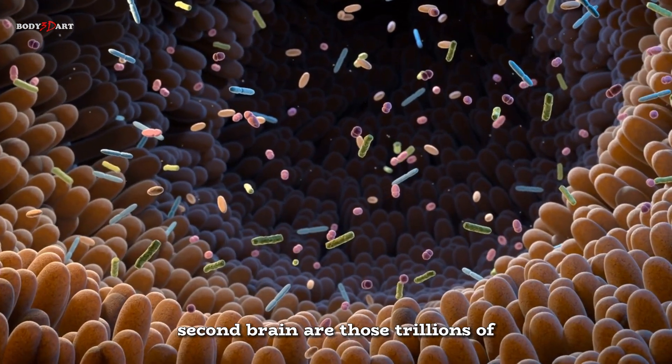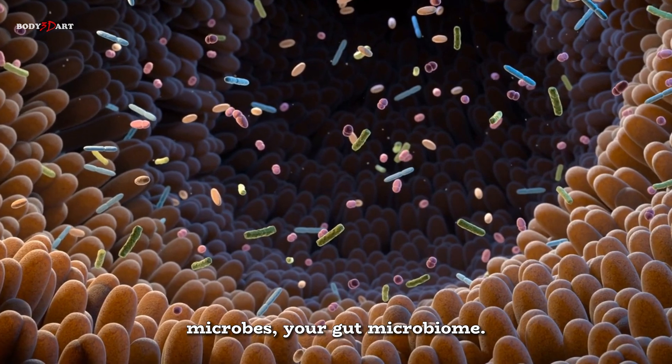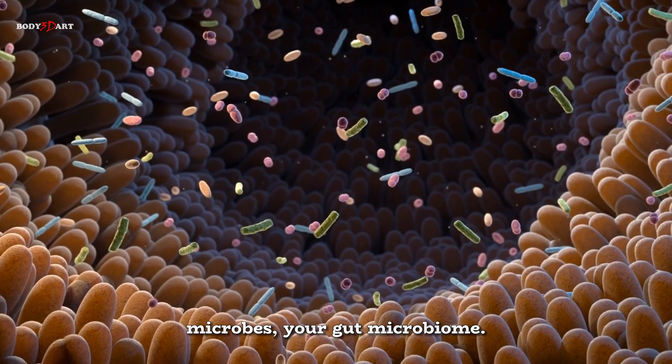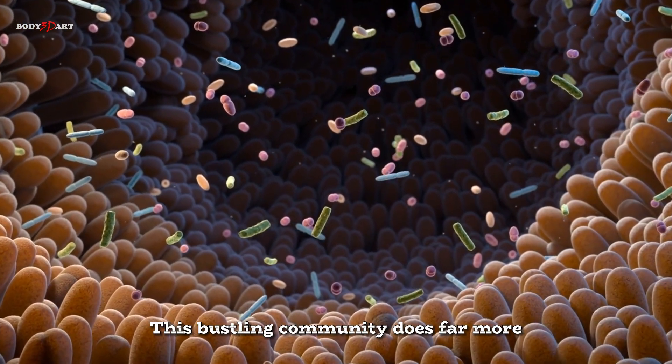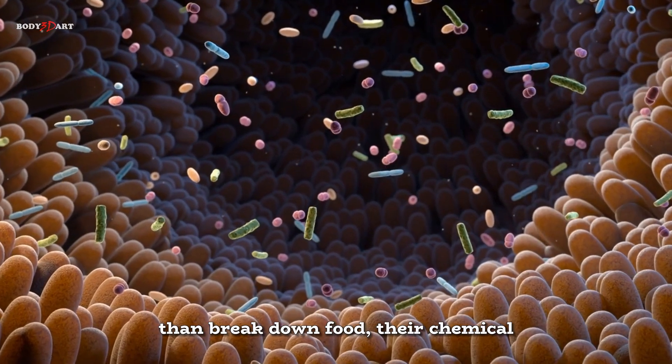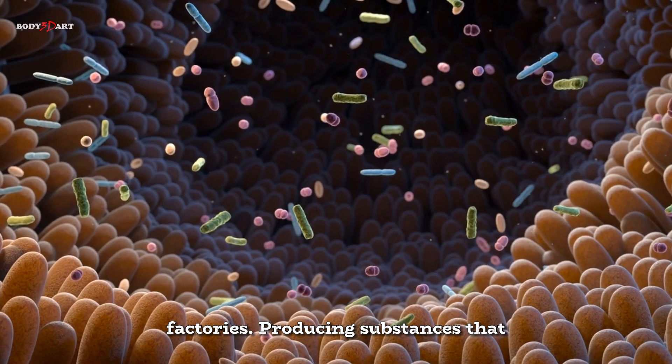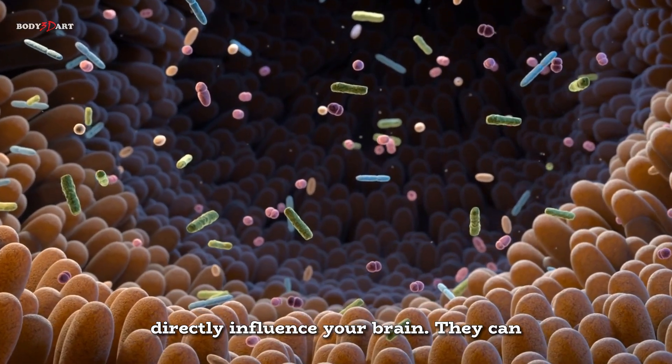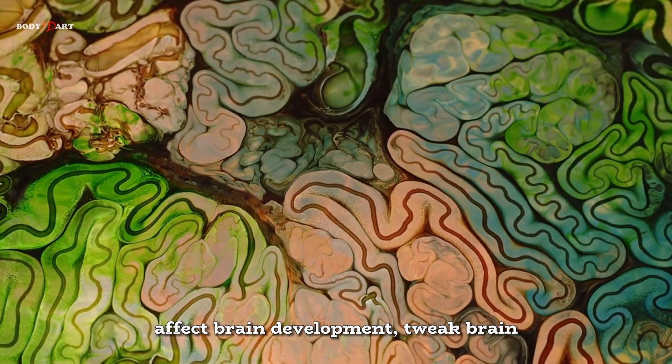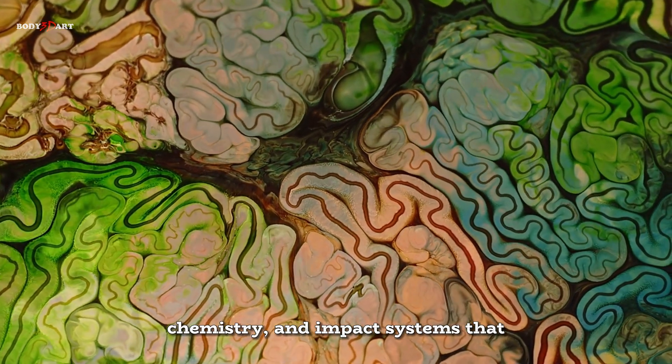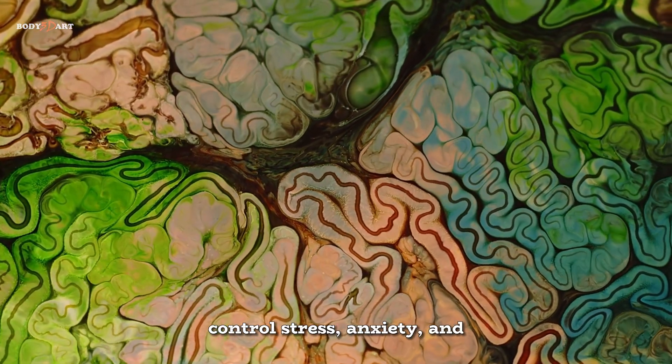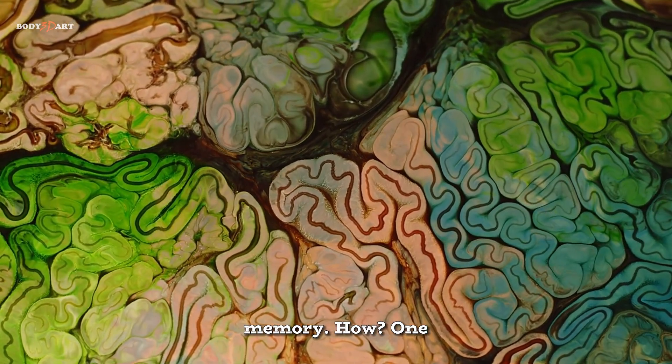Living within this second brain are those trillions of microbes, your gut microbiome. This bustling community does far more than break down food. They're chemical factories, producing substances that directly influence your brain. They can affect brain development, tweak brain chemistry, and impact systems that control stress, anxiety, and memory.